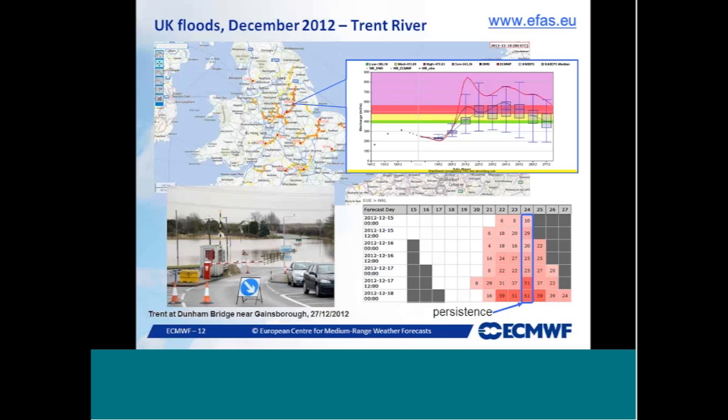An example of an EFAS forecast is the UK floods of December 2012, visible on the EFAS website at www.efas.eu. For the River Trent, on 18 December we saw a substantial probability of exceeding the 5-year return period threshold over the following day. Forecasters on duty can see the persistence table, which checks consistency and persistence of the flood signal over consecutive forecasts. An alert was sent and the flood was confirmed in the last 10 days of December.